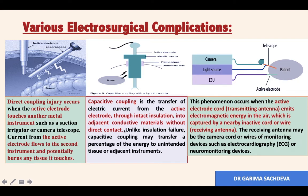The second is capacitative coupling. In capacitative coupling, there is transfer of electric current through intact insulation into the adjacent conductive material, but there is no direct contact. There is no insulation failure here — the insulation is intact — and some part of the electromagnetic energy is transferred to the adjacent viscera, which causes burns.